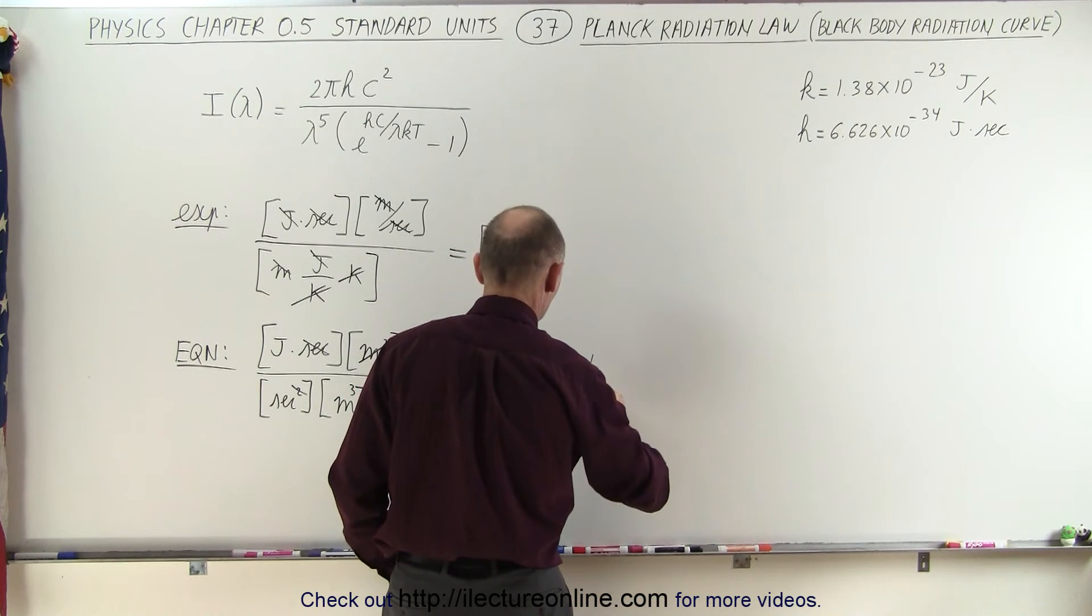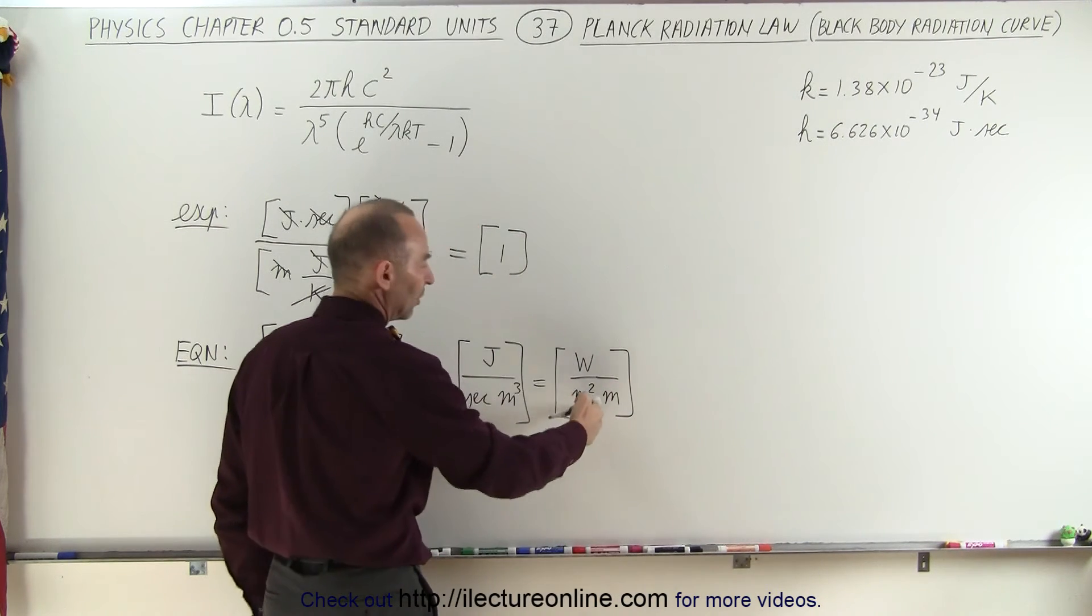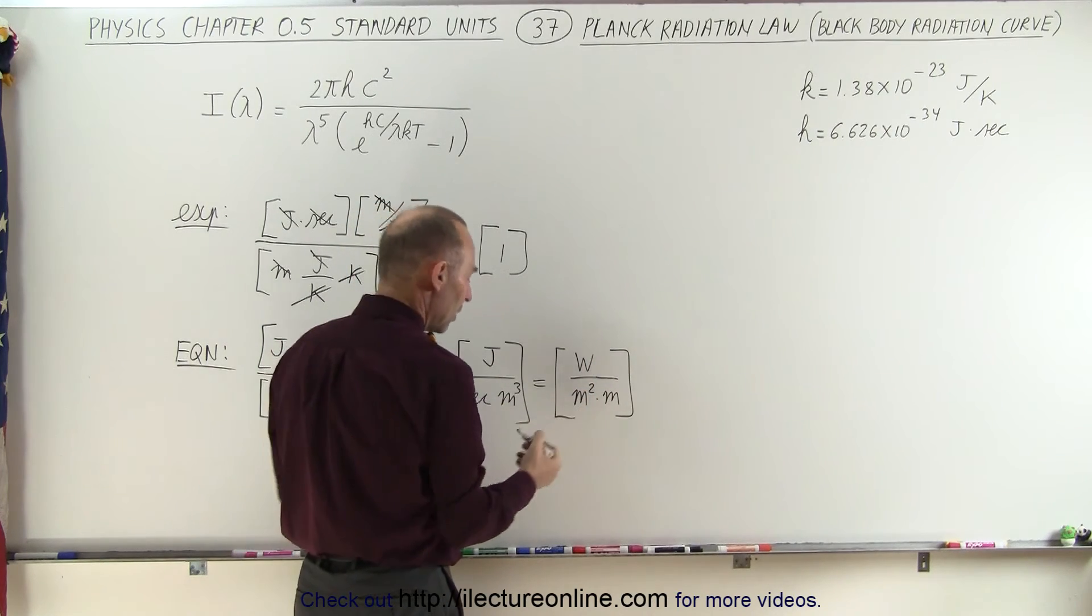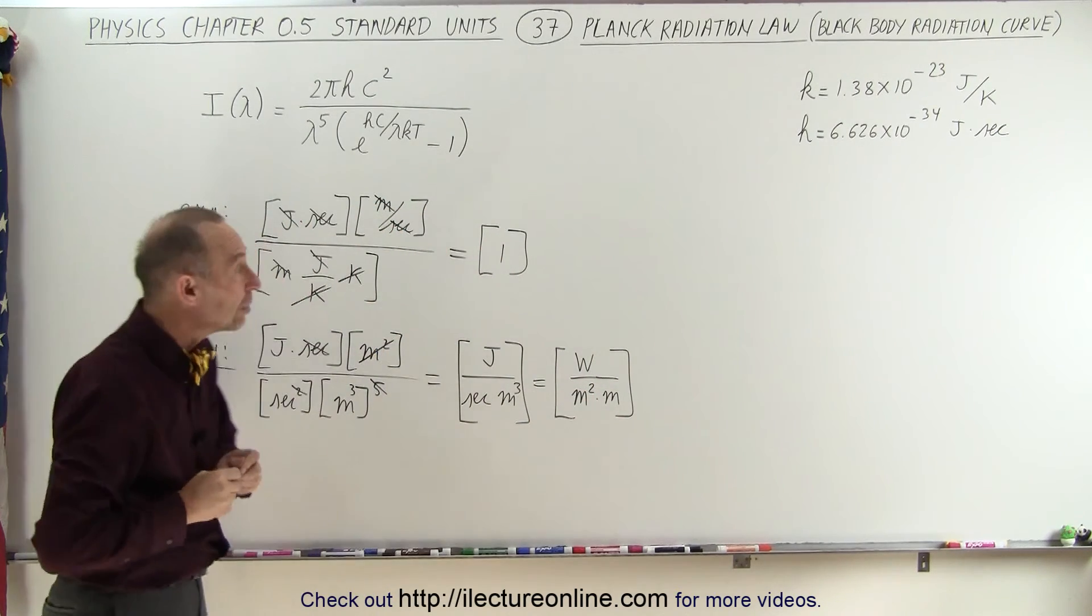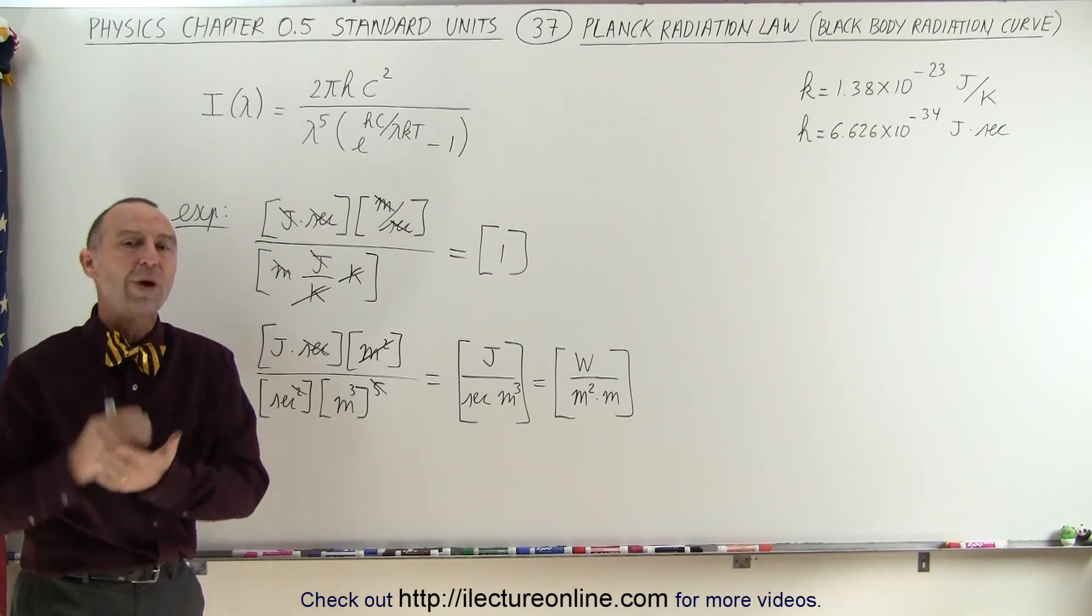So, I have watts per cubic meter, but actually, I'm going to write as meter squared times meter. Because this here, watts per square meter, is indeed units of intensity, but the way the Planck radiation curve is written, it's in terms of intensity per wavelength.